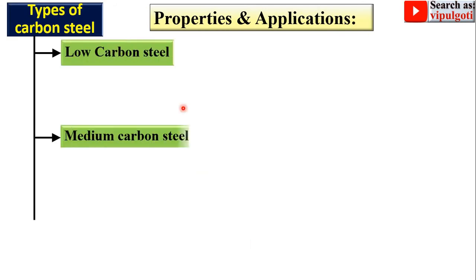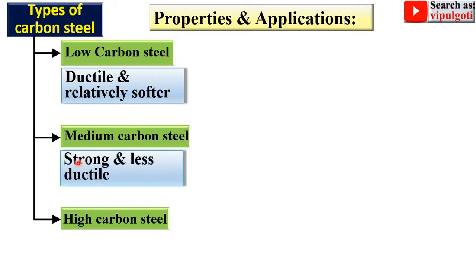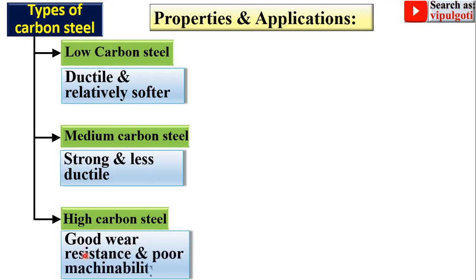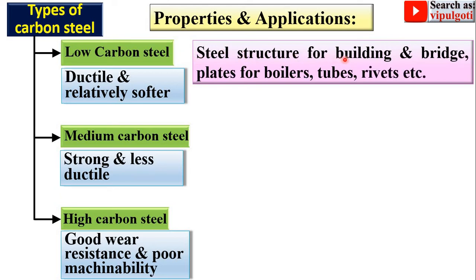Now let's see the properties and applications of the types of carbon steel. Low carbon steel is ductile and relatively soft. Medium carbon steel is strong and less ductile. High carbon steel has good wear resistance and poor machinability. Low carbon steel is used for steel structures, buildings, bridge plates, boilers, and tubes.